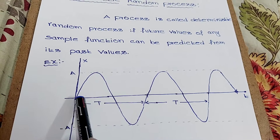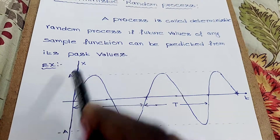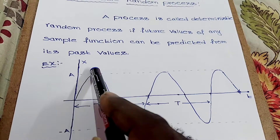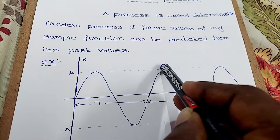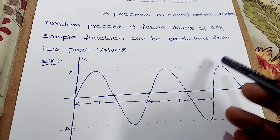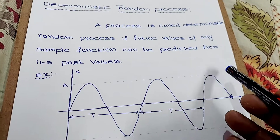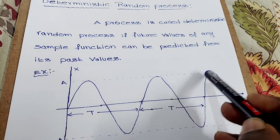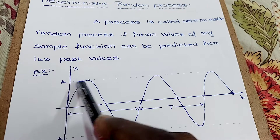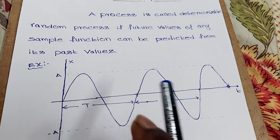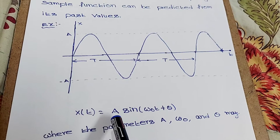Let's see the figure. Here, the amplitude is constant and the time period is also constant. Take the x-axis as t and the y-axis as x. From past values, we can predict the future values — that is the deterministic random process.